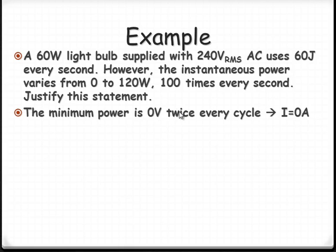So minimum power is 0 volts twice every cycle where the current is 0. Basically, because we go up to a peak, back to 0, down to a peak, back to 0. So twice every cycle, the current is going to 0. So, P equals VI, the 0 part is quite easy to justify.